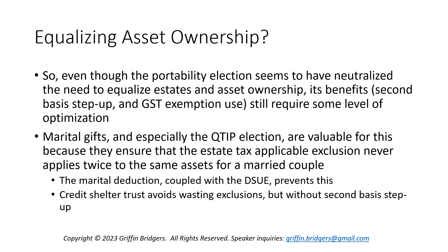You can't necessarily predict the order of death all the time. Ideally, we still have to equalize as close to 50-50 between spouses as we can get, or at least equalize to a point where each spouse owns enough to fully fund their estate and GST tax exemptions — the basic amounts, not the DSUI. With marital gifts in the estate plan, especially the Q-tip election, these can be valuable in this context of a second basis step-up, because there's another hidden principle that you should never have the estate tax applicable exclusion apply twice to the same assets, at least at the same generational level. With a married couple, that's easy to accomplish because of the marital deduction, which is created through the Q-tip election. When that's coupled with the DSUI, that creates this second basis step-up without wasting an exclusion of the surviving spouse on the same assets.